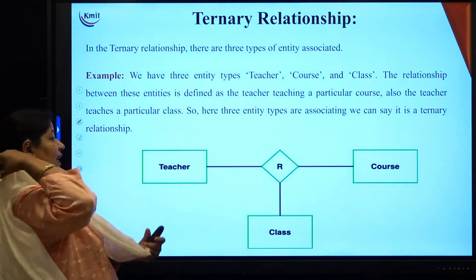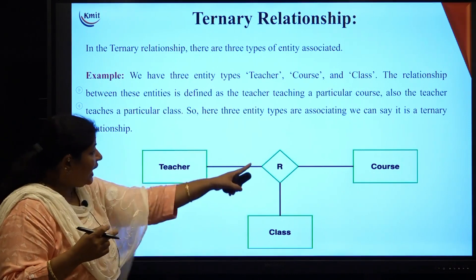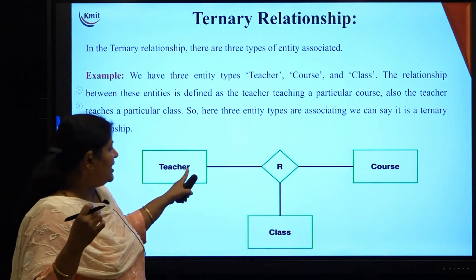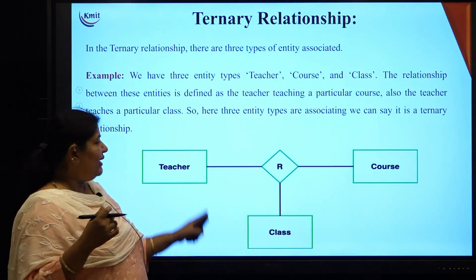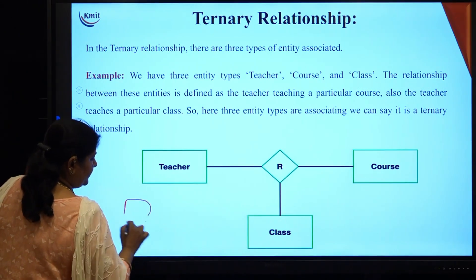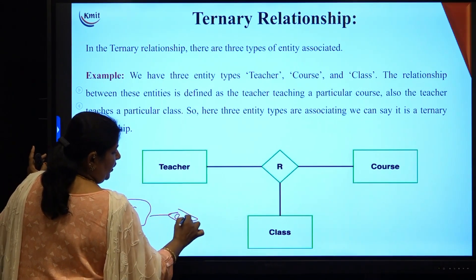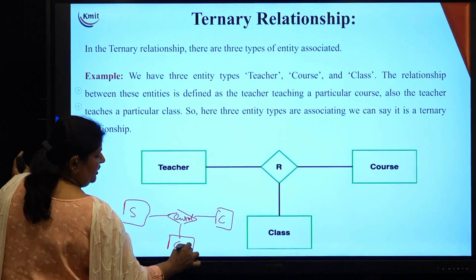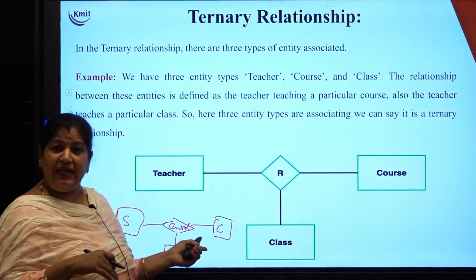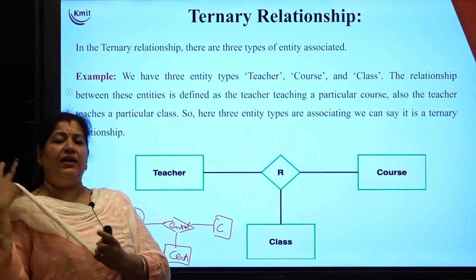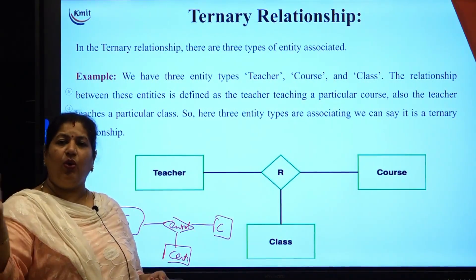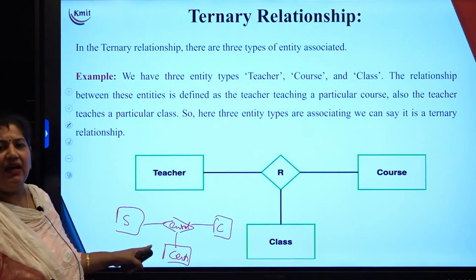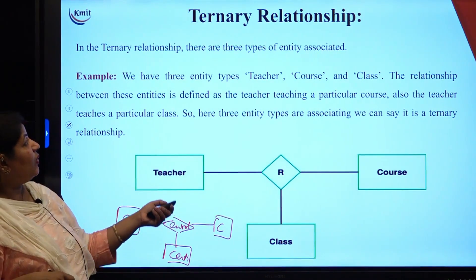Coming to ternary relationship, here three types of entities are associated. For example, a course is conducted in a classroom and a teacher takes up the class. Or, a student enrolls into a course and on completion is given a certification — the certificate itself is an entity with attributes like certificate number, student, course, and grade. When three types of entities are associated, the relationship is called ternary.